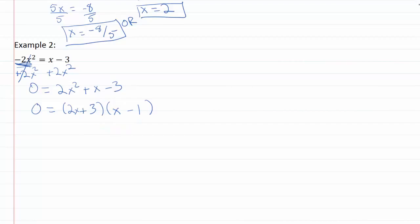So now let's go ahead and set each of these factors equal to zero. So zero equals the first one, 2x + 3, and zero equals the second one, x - 1. So minus three minus three, negative three equals 2x, divide by two, x equals negative three halves.